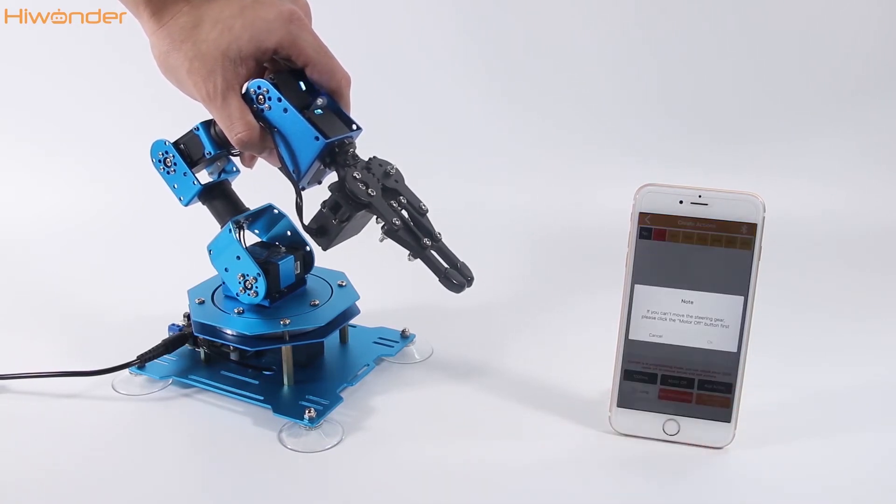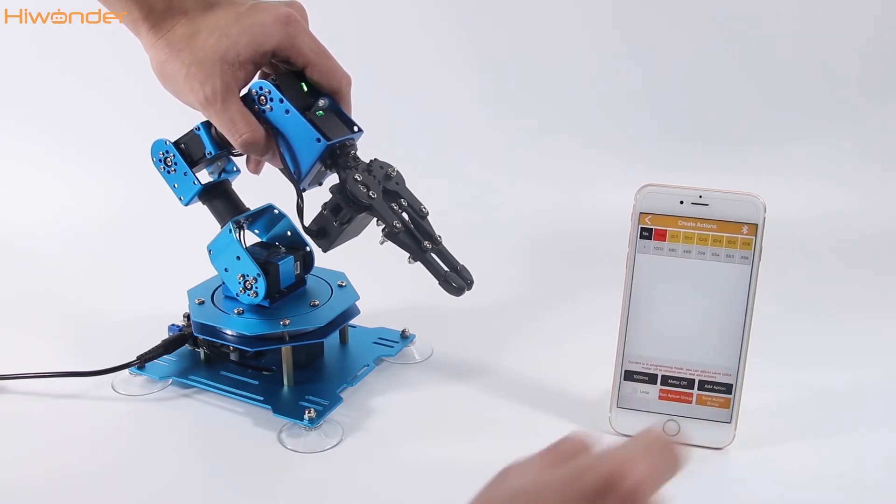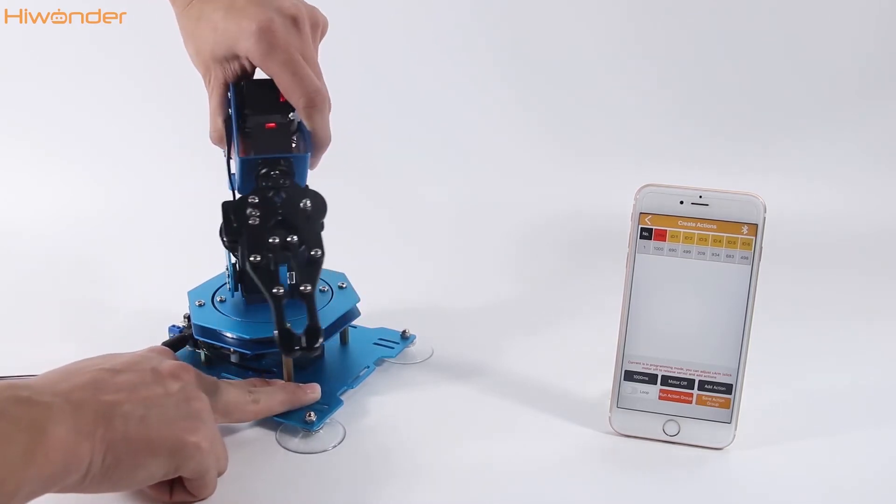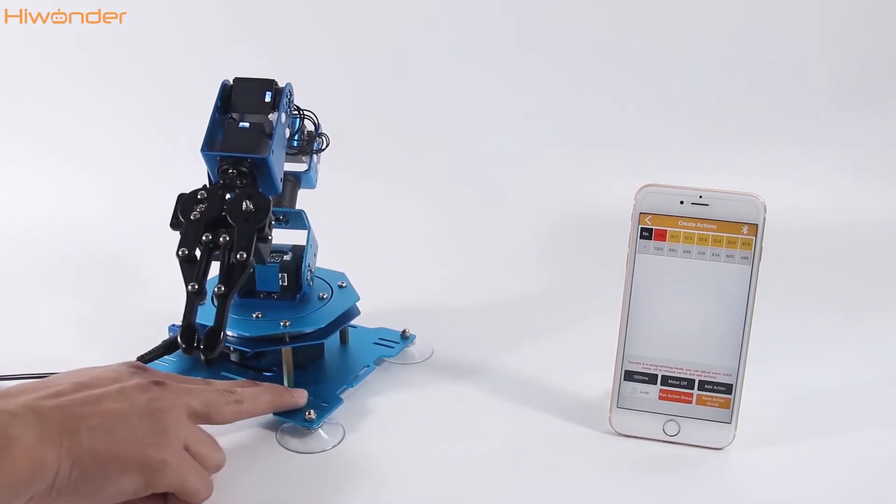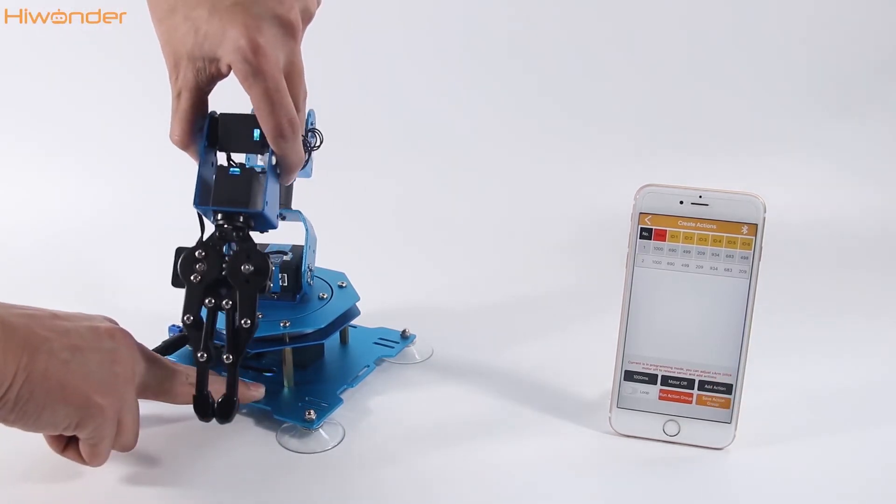We can set this posture as the first action. Click add action. Rotate the robotic arm to the right side as the second one. Put down the robotic arm as the third one.